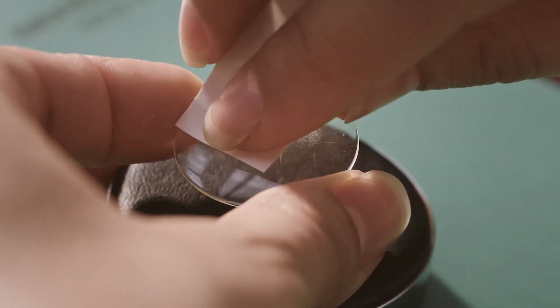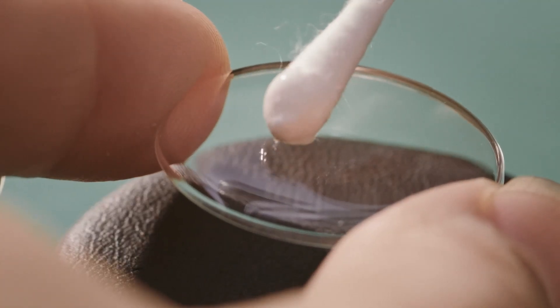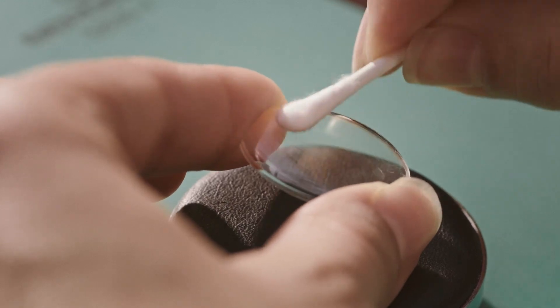The plexiglass gets a makeover. I start by removing the visible scratches. I can polish the entire plexiglass to make it completely transparent again.